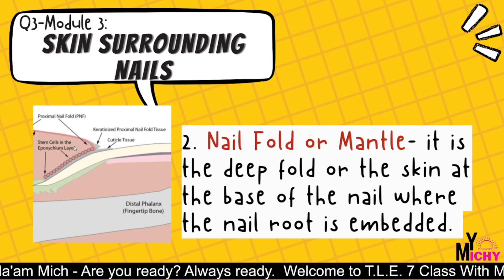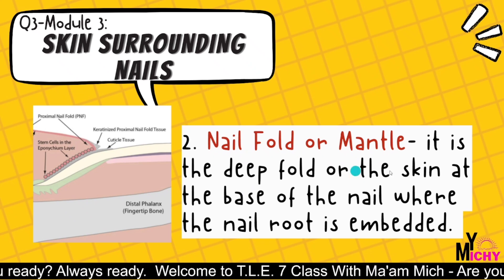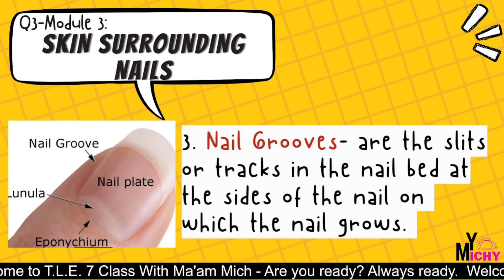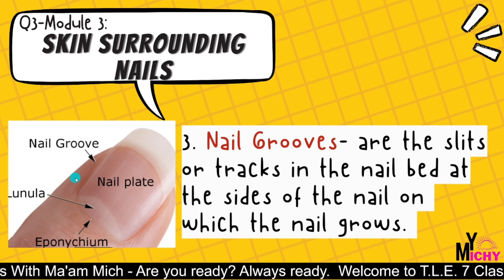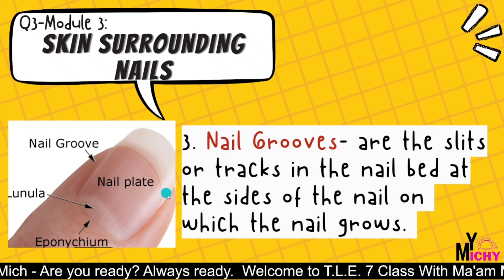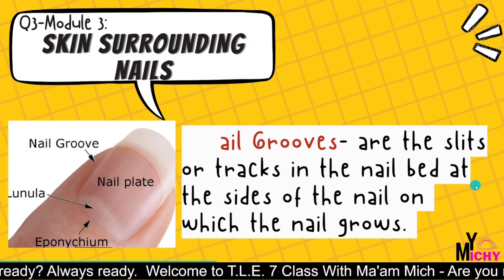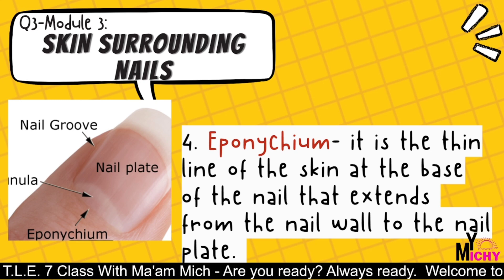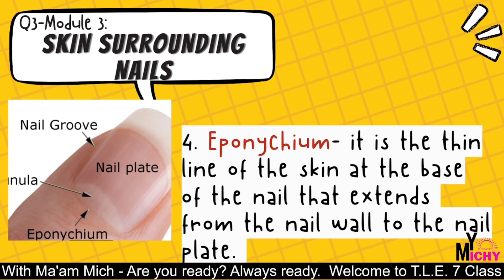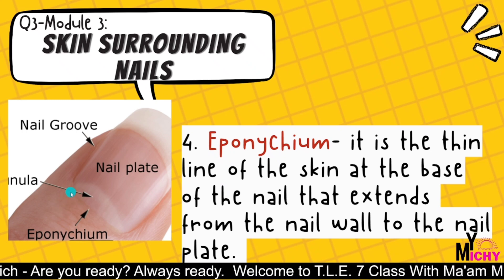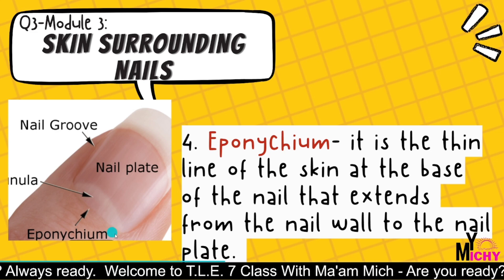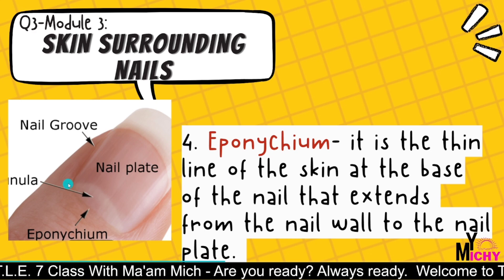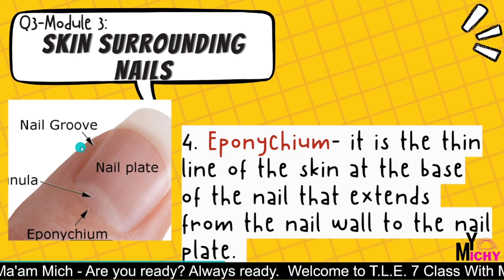Nail grooves are the slits or tracts in the nail bed at the side of the nail on which the nail grows. The eponicium is the thin line of skin at the base of the nail that extends from the nail wall to the nail plate.